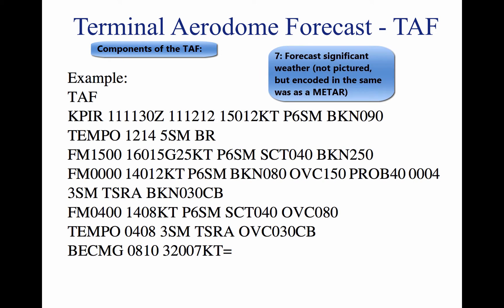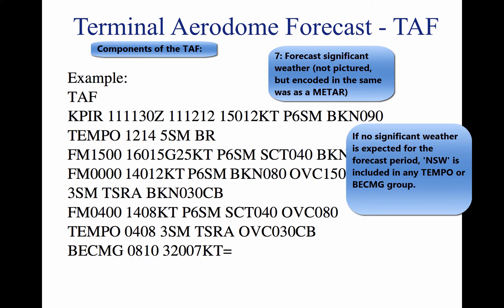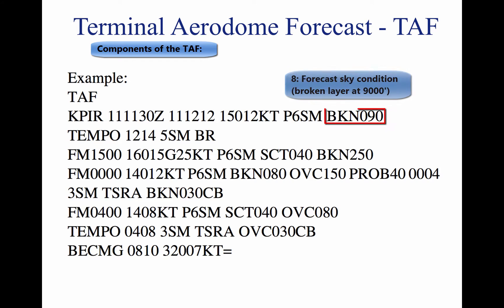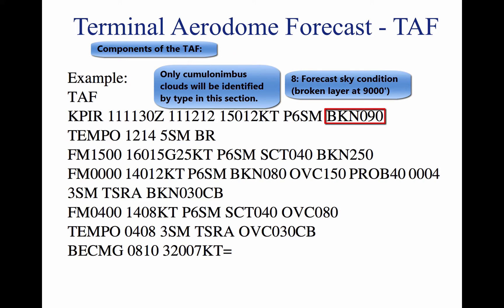7. Forecast significant weather. Weather phenomena are coded in the TAF reports in the same format as the METAR. If no significant weather is expected during the forecast time period, the denotation NSW is included in the becoming or temporary weather groups. 8. Forecast sky condition, given in the same manner as the METAR. Only cumulonimbus (CB) clouds are forecast in this portion of the TAF report, as opposed to CBs and towering cumulus in the METAR.